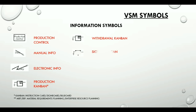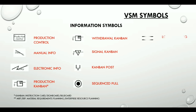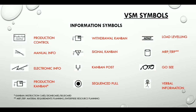The signal kanban icon is used whenever on-hand inventory levels in the supermarket between two processes drop to a trigger or minimum point. The kanban post icon is a location where kanban signals reside for pickup. The sequenced pull icon represents a pull system that gives instruction to sub-assembly processes. The load leveling icon is a tool to batch kanbans in order to level production volume and mix over a period of time. The MRP or ERP icon is used to schedule using MRP, ERP, or other centralized systems. The go-see icon is for gathering information through visual means, and the verbal information icon represents verbal or personal information flow.